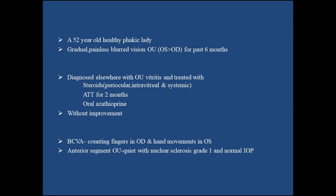A 52-year-old healthy female presented with gradual, painless blurred vision in both eyes since 6 months. She was under treatment for OU vitritis and was prescribed local and systemic steroids, anti-COX therapy, and oral azathioprine sequentially, but without visual improvement.